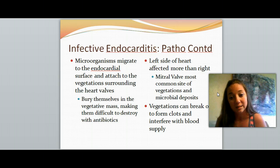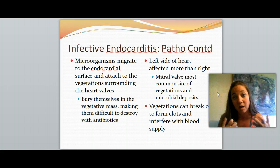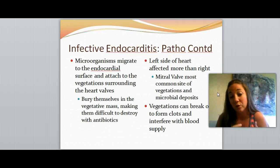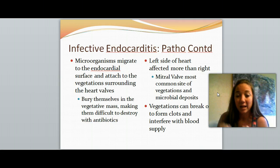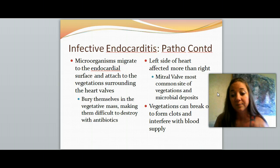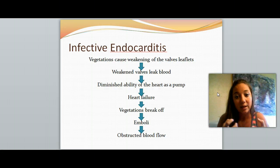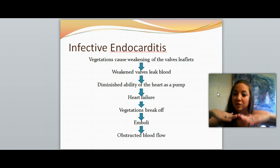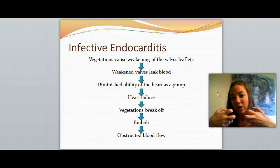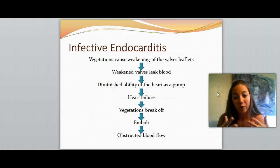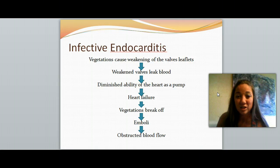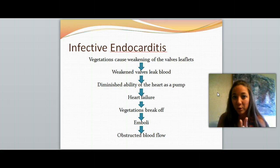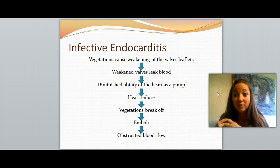The left side of the heart is usually more affected than the right side, typically because the mitral valve is the one that develops those vegetations more likely. The vegetations can break off and form clots that can interfere with blood supply anywhere — causing a heart attack, a stroke, or a DVT. The vegetations cause weakening of the valve's leaflets, making them short, hard, and thick. The weakened valves leak blood because they don't close properly, and the heart has diminished ability to pump blood forward. This leads to heart failure, and worst case scenario the patient can die.